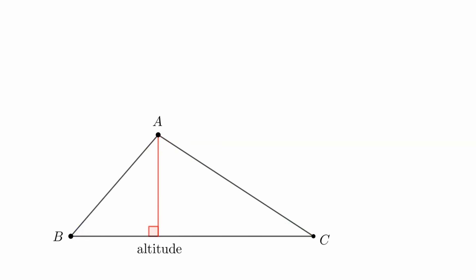From vertex A, this is the altitude. This is the median. And this is the angle bisector. Sometimes it's important to know what these segments are. But in this video, our focus will be on angle bisectors.